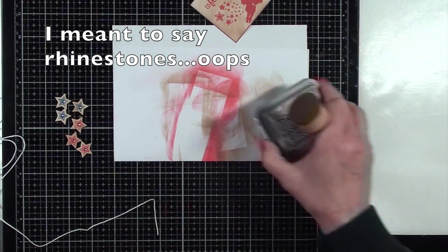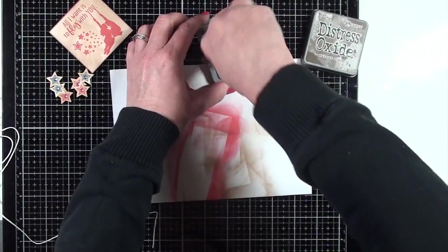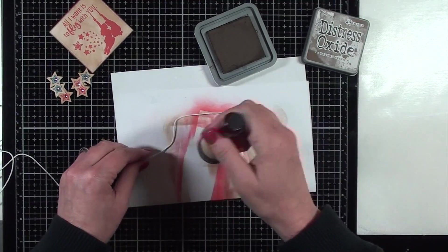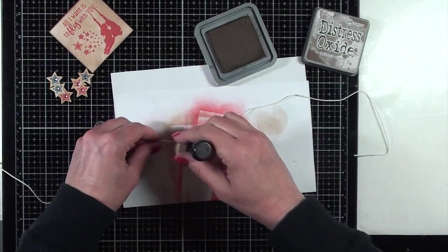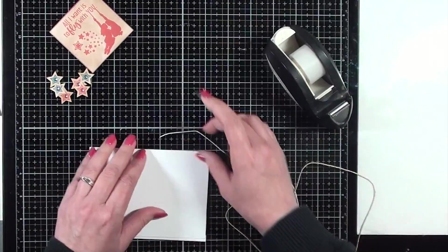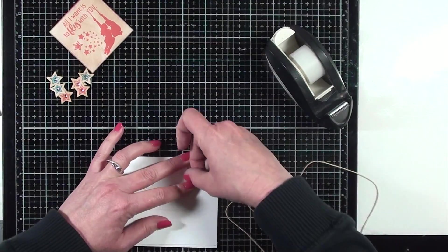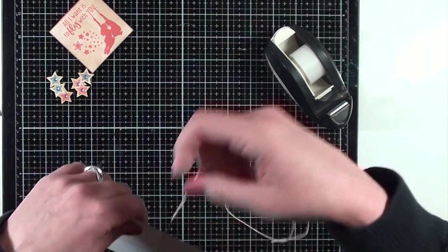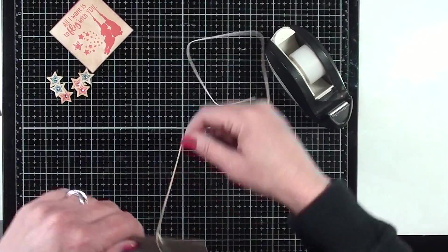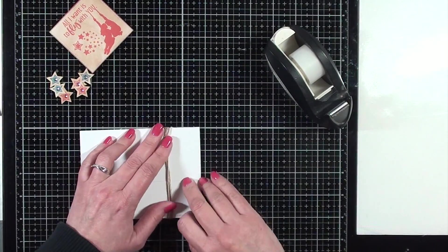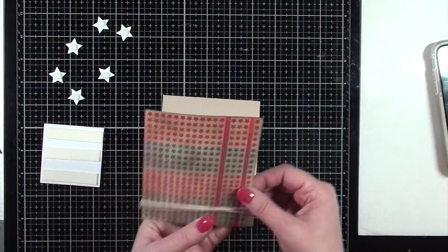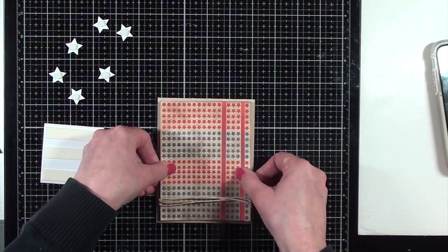Now I'm taking some hemp twine and the only color that would have worked in this was actually pretty stark white. So I'm using the same Distress Oxide ink to color it to make it coordinate better with the project. I'm wrapping the twine around this card panel three times and just using some Scotch tape to adhere it.